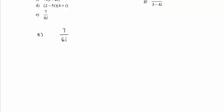Let's look at Part E. When we are dividing by a complex number, we look at the denominator and determine its conjugate. The conjugate of 6i is negative 6i. So we multiply this expression into the numerator and the denominator.